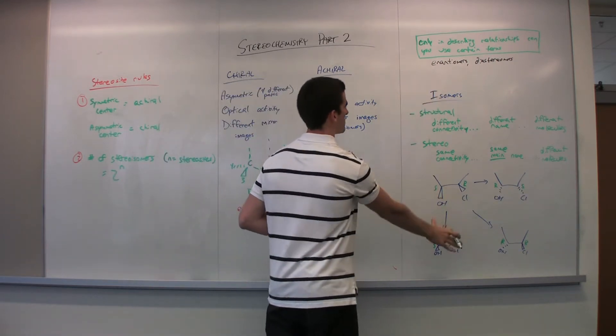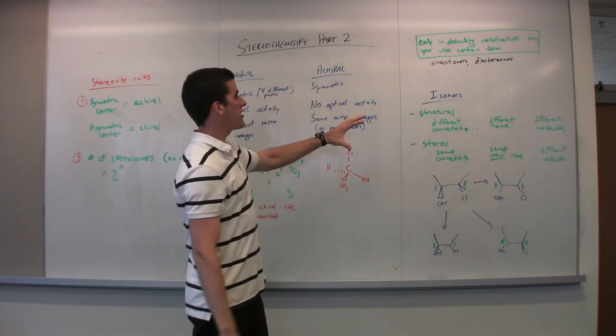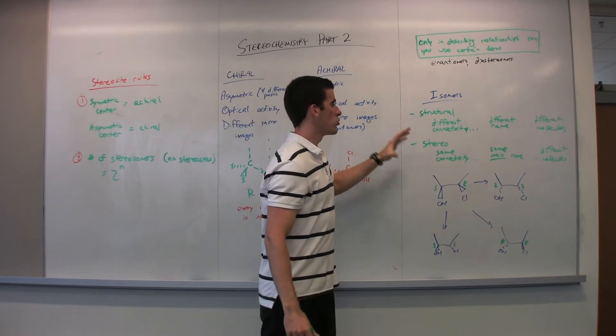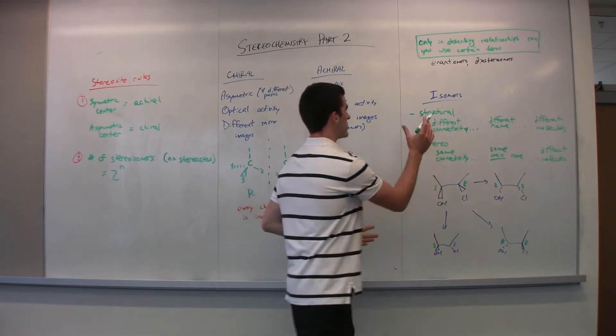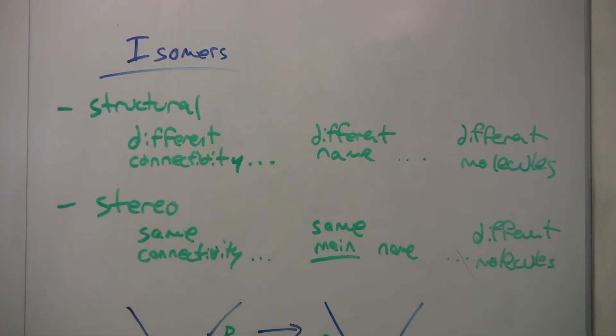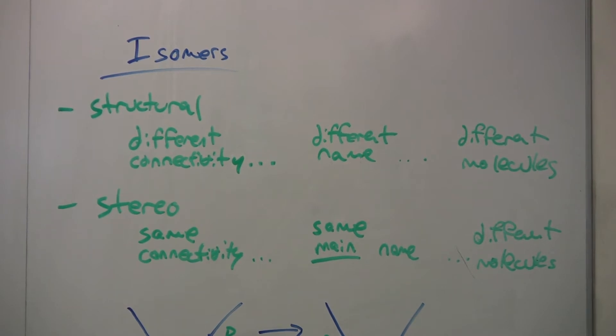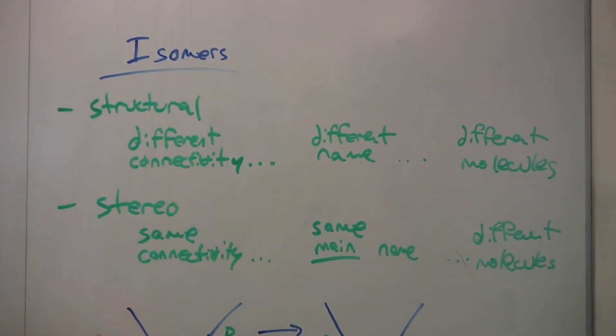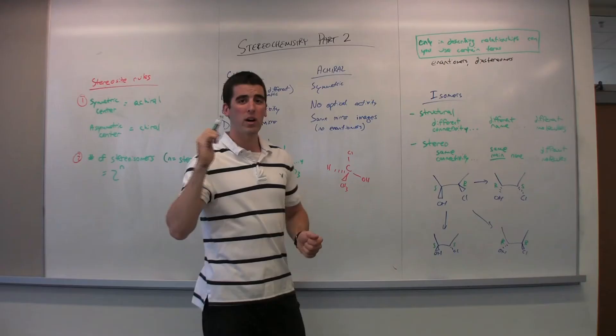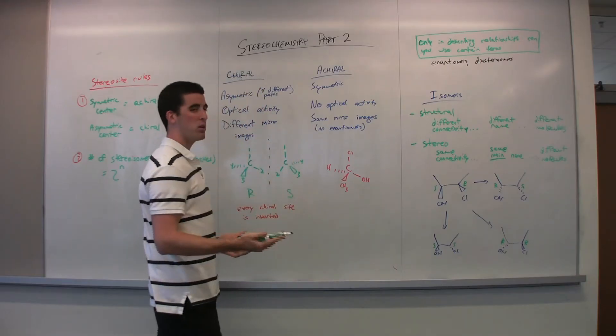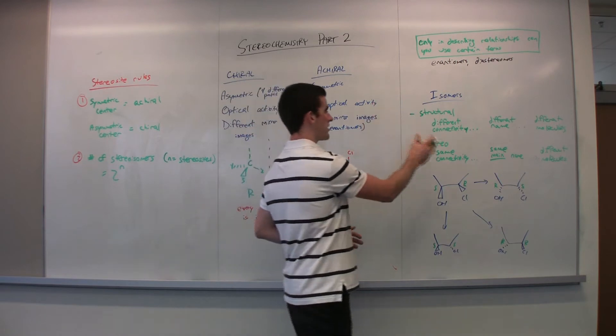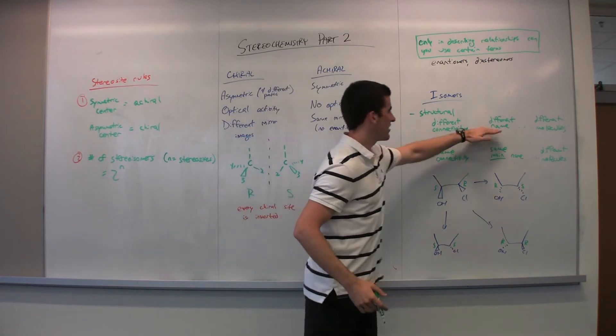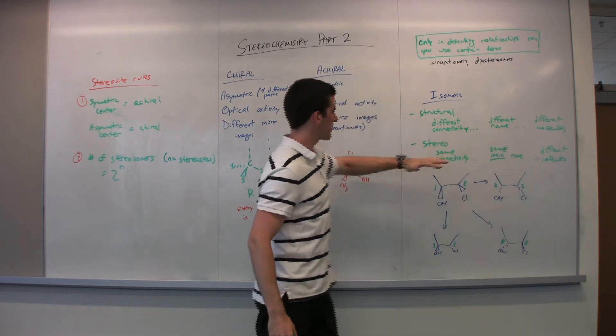So this is important for going through isomers like this. If we're going to contrast structural and stereoisomers, we need to know certain rules and what they apply to. So structural isomers, you have different connectivities. While you do have the same formula, the connectivity is different. In that sense, you have a completely different name and different molecules. So in part one, I made the rule that you have a different name, you have a different molecule. That holds true with structural and stereoisomers. So keep that in mind. Different connectivity, different name, different molecules.